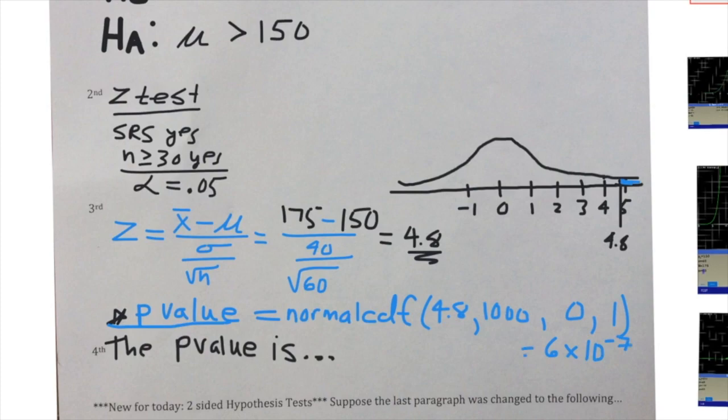So the p-value is very small: 0.0000006.